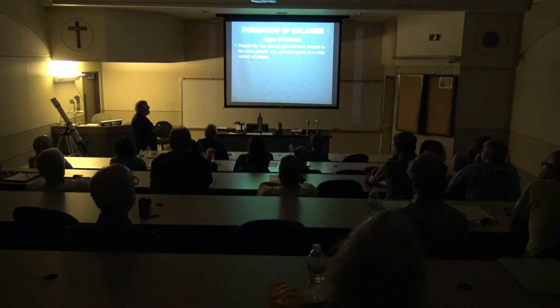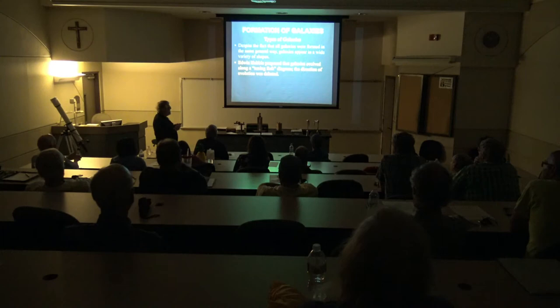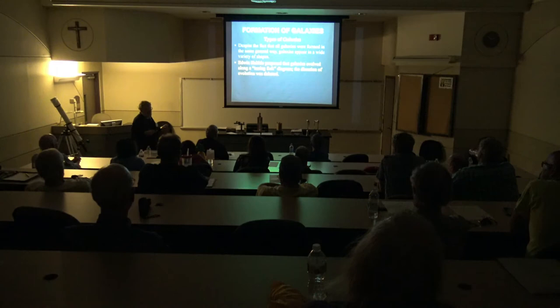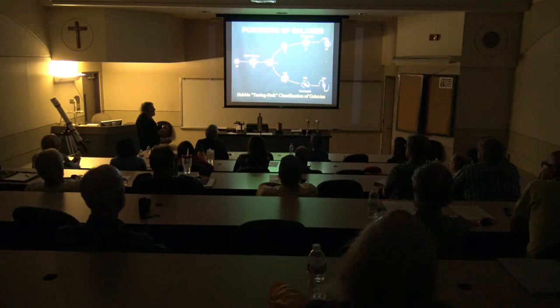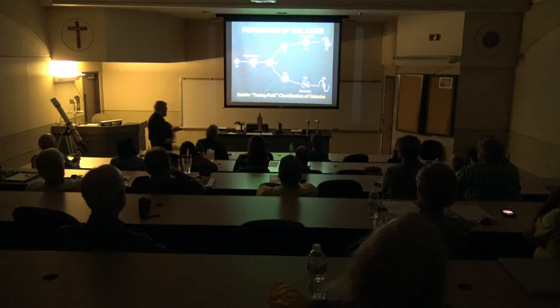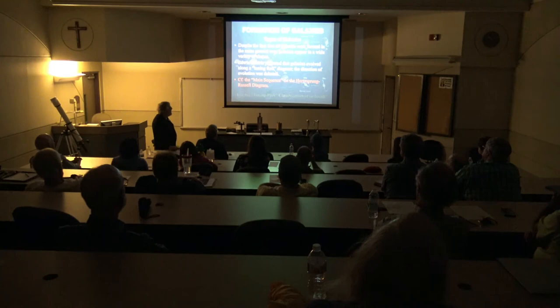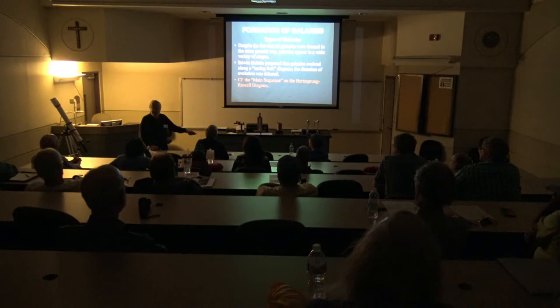Even though galaxies were all formed in the same general way, they appear in a wide variety of shapes. Edwin Hubble proposed they evolved along a tuning fork diagram showing elliptical galaxies and spirals with tightly or loosely wrapped arms, or barred spirals. We now don't think galaxies evolve from one type to another — their shape is determined by how much angular momentum the galaxy had, analogous to how a star's mass determines its place on the main sequence for its entire life.